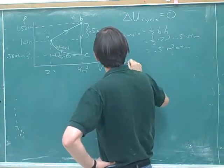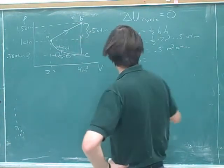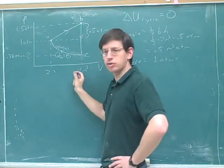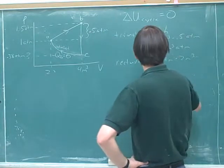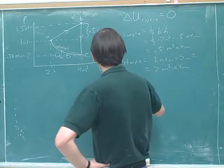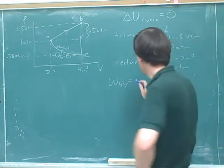And then the rectangle, is that what you got? The rectangle has a height of 1 atmosphere and a width of 2 cubic meters, 4 minus 2. So that would give you 2 cubic meters times atmospheres. So the total work that's done would be 2 plus 0.5, which is 2.5?